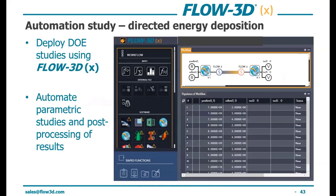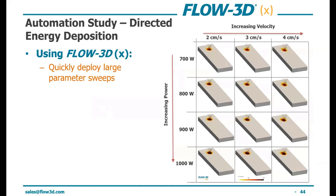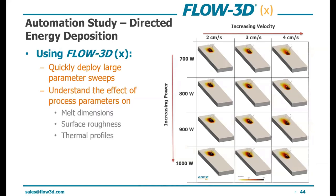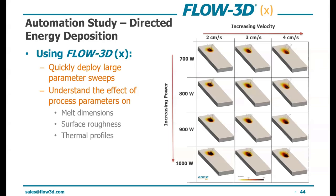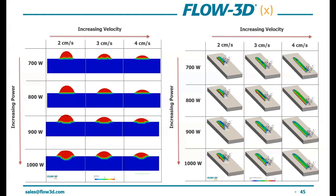Using Flow3DX, we quickly develop large parameter sweeps and understand the effects on key metrics such as melt pool dimensions, surface roughness, and thermal profiles. We can quickly create a matrix with different power and speed profiles. This is incredibly time-saving and useful — and this isn't just for two variables. You can look at the effect of increasing power and speed on the melt pool depth, or on the direction of the melting distance. The combinations are almost infinite and up to you as the user.